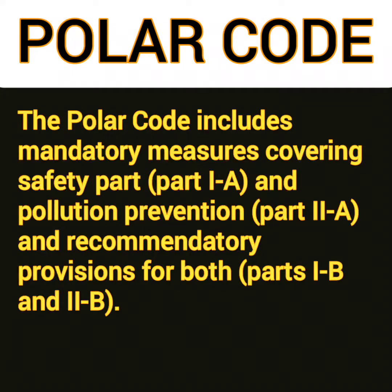Now let us go through the contents of the Polar Code, which will help you understand this code better and answer better during the examinations. The Polar Code includes mandatory measures covering the safety part, which is Part 1A, and then there are pollution prevention measures, which is Part 2A. Part 1A has 12 chapters and Part 2A has 5 chapters, and further there are recommended provisions for both these parts, named as Part 1B and Part 2B.